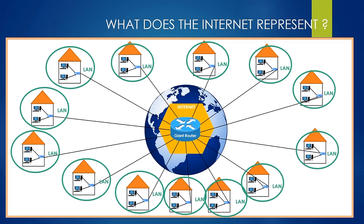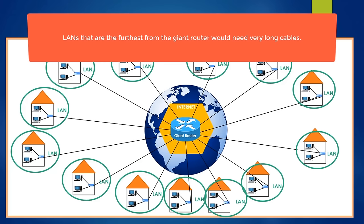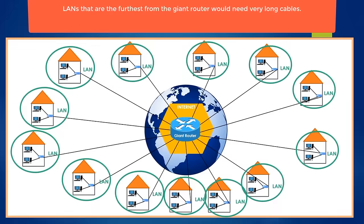Just think about the consequences of this problem. We have talked about two vital problems, but it isn't over. Another major problem is the cable length problem. Imagine how long the cable must be if there was only one giant router in the middle of the world — especially LANs furthest from the giant router would need very long cables. Therefore, this design is a very problematic design, and the solution for all these problems is this distributed structure all over the world.